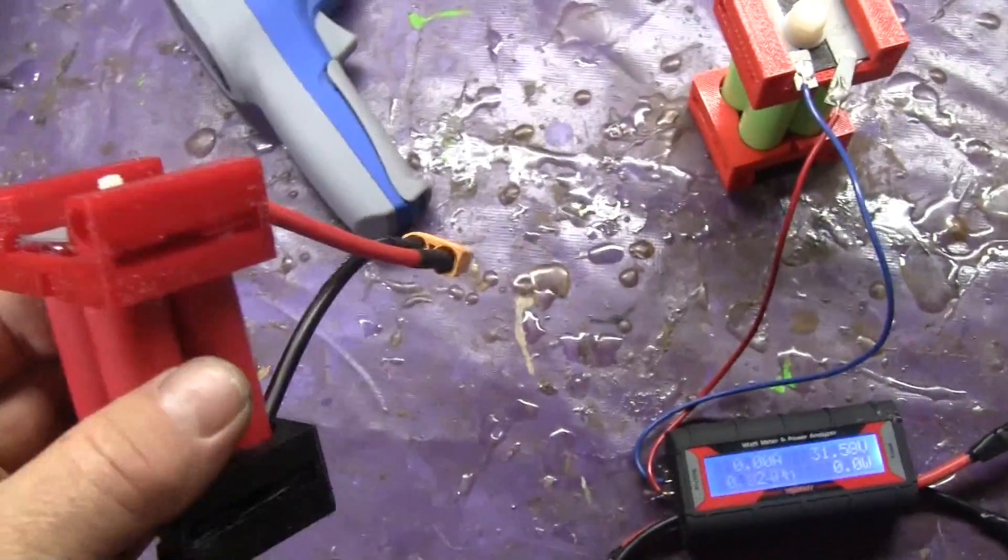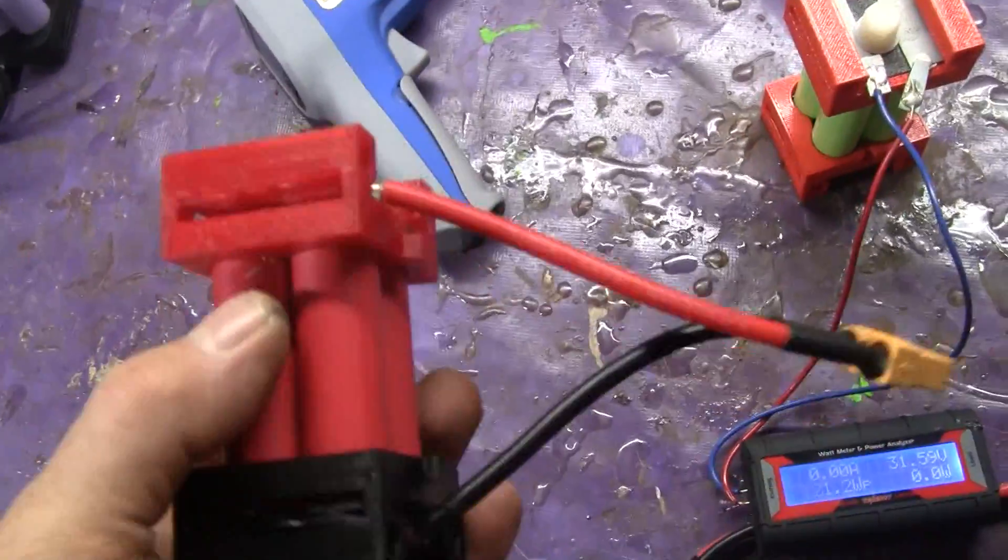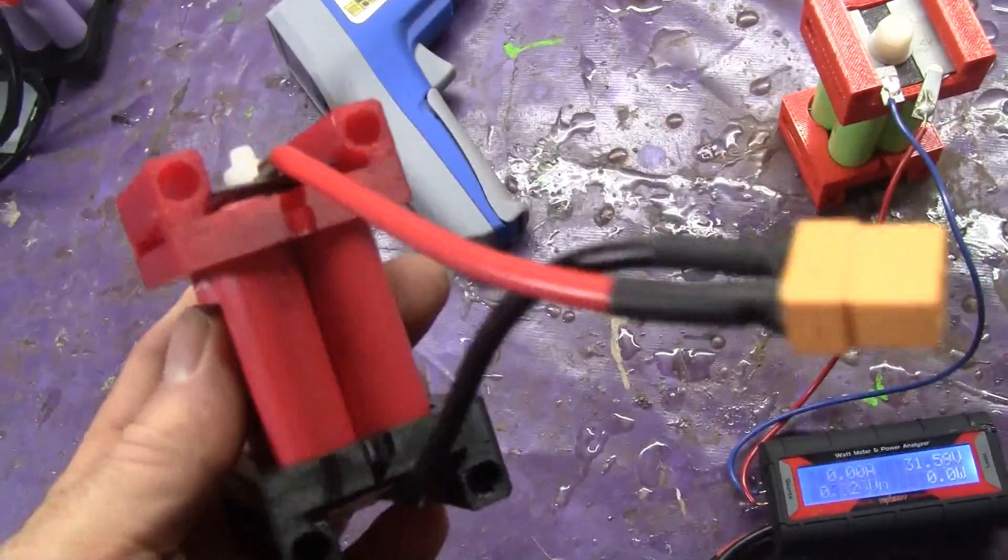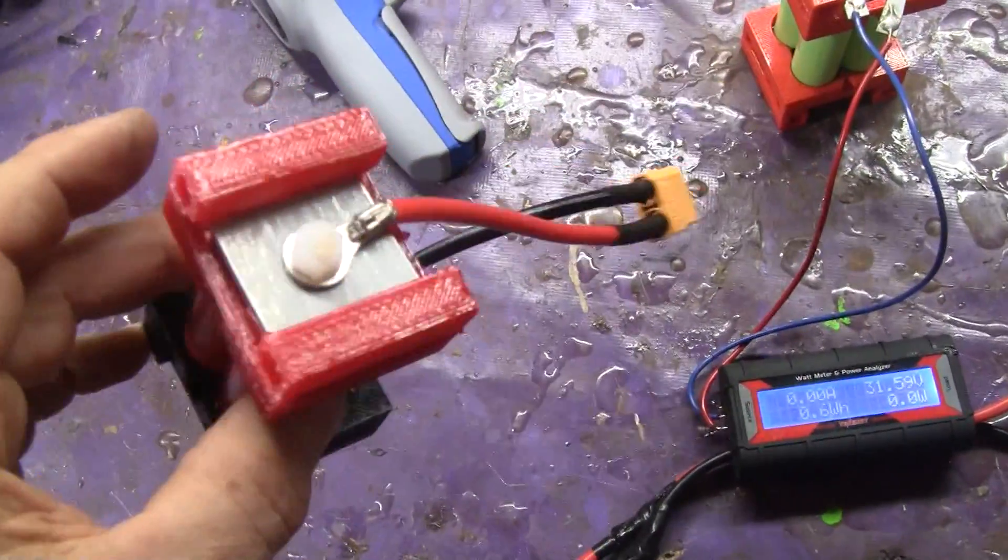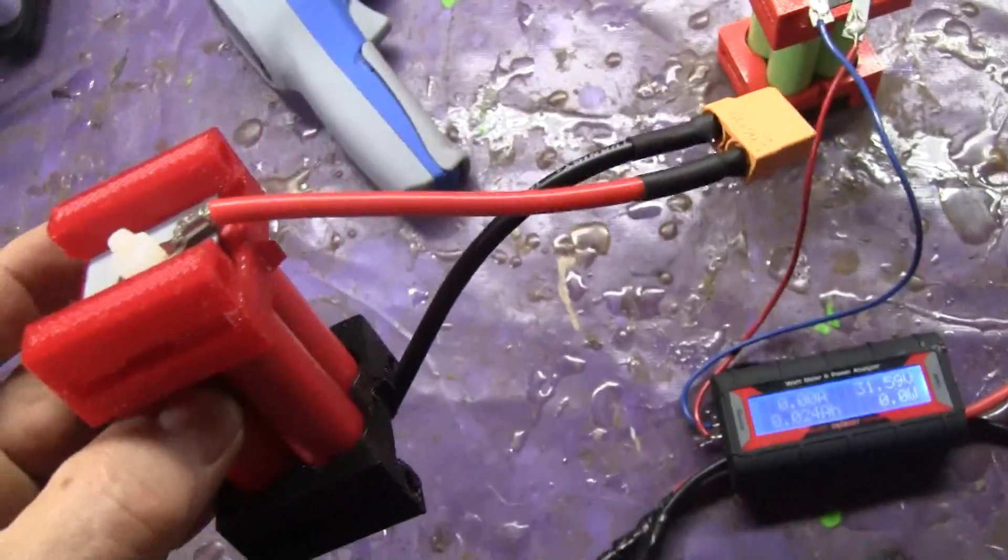This is a battery block four pack. It's got four GA cells in parallel. The GA cells put out about 10 amps each. So we're going to see how much current this battery block will put out.